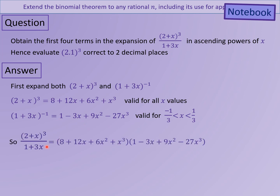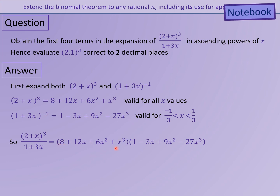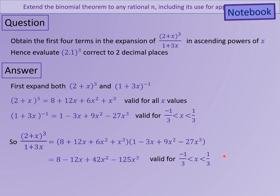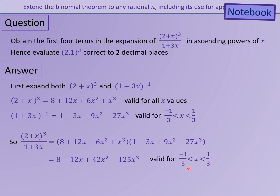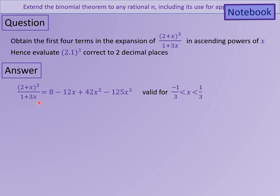What I get is I need to multiply these two things together. There's a numerator multiplied by this part, which — if that was a 1 — would be the denominator. Multiplying the two parts together, I get 8 minus 12x plus 42x squared minus 125x cubed, noting the valid range. That's important — every single time you could lose marks if you don't put the valid part in, so include it every single time.